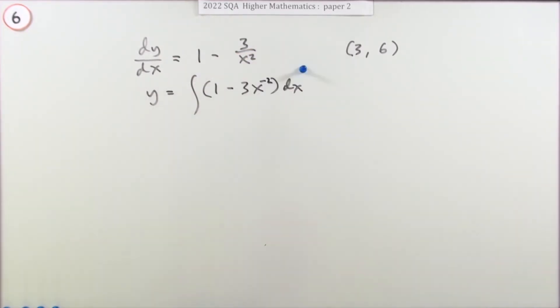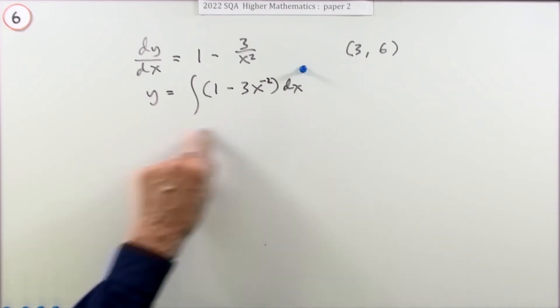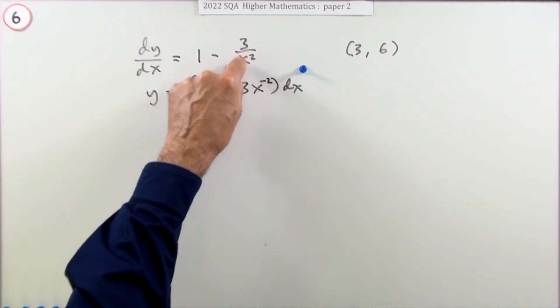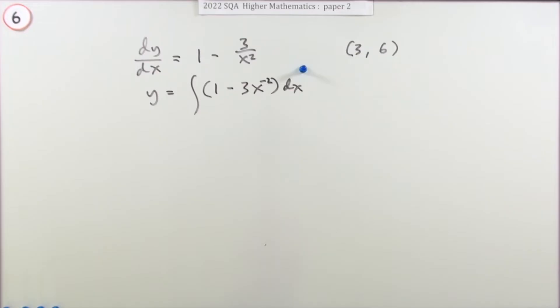So rewrite that as 3x to the negative 2. Now, doing that gets the first mark. Not actually saying the integral yet, just changing that into the form of x to the negative 2, getting it into a suitable form.